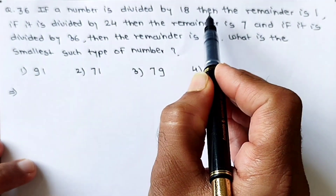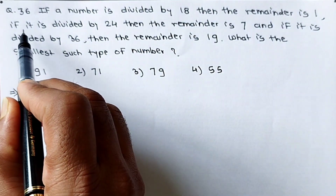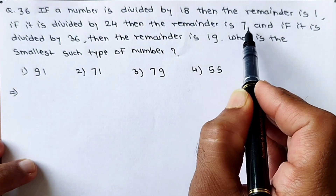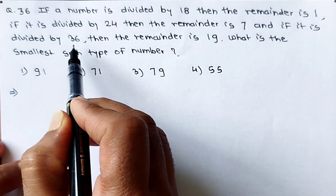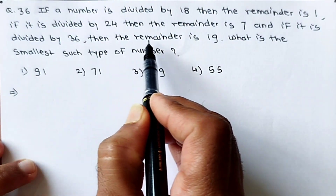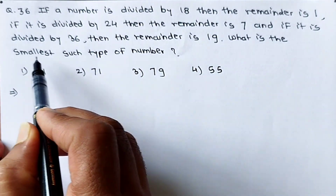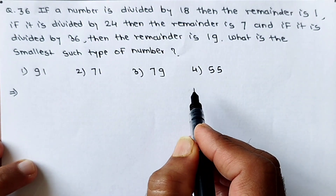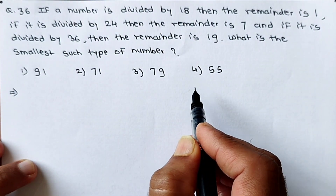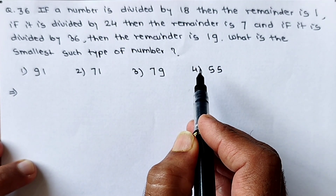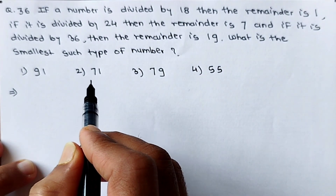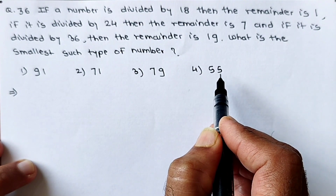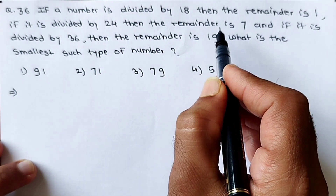See question number 36: If a number is divided by 18 the remainder is 1, if it is divided by 24 the remainder is 7, and if it is divided by 36 the remainder is 19. What is the smallest such number? To get the solution, you can take the help of the options directly because such types of questions are very lengthy.